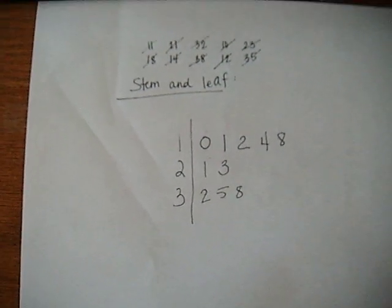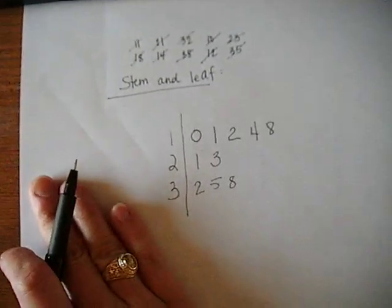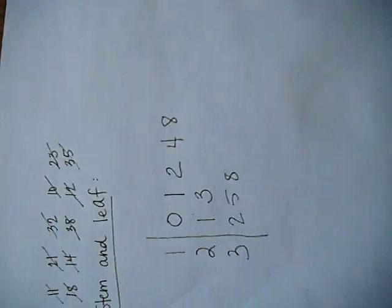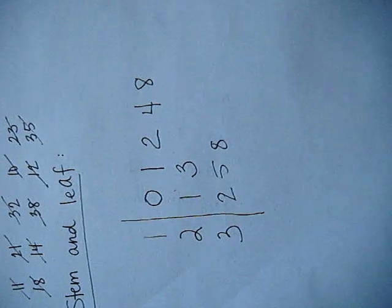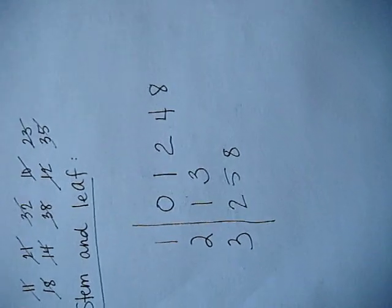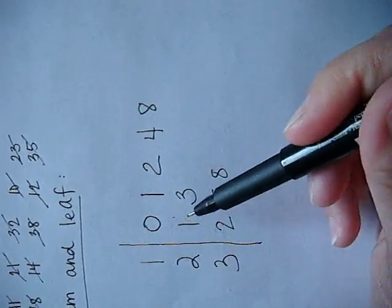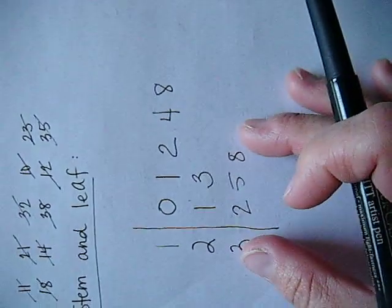Okay, now the cool thing with the stem and leaf diagram is once you have it put together, if you turn it the other direction, it sort of looks like a histogram. It gives you a graphical representation of which numbers, which categories happen most frequently.